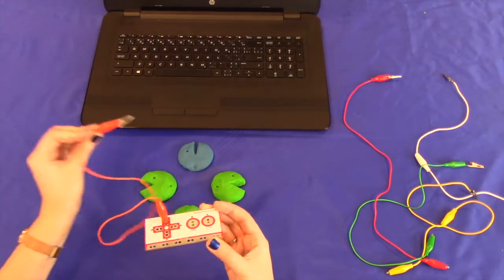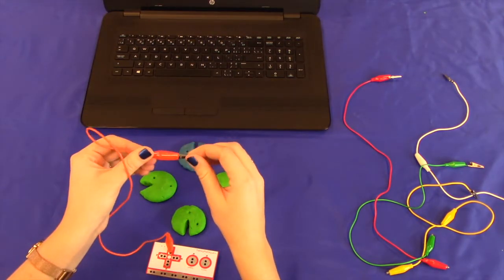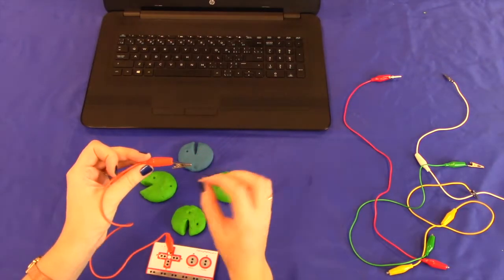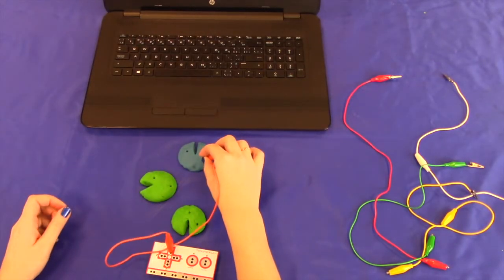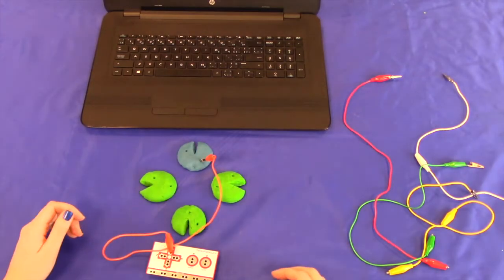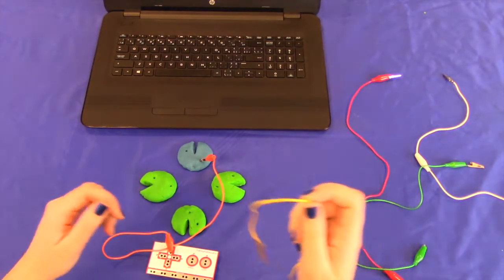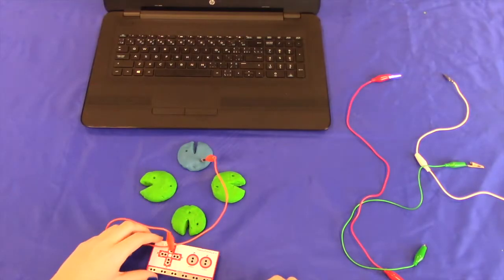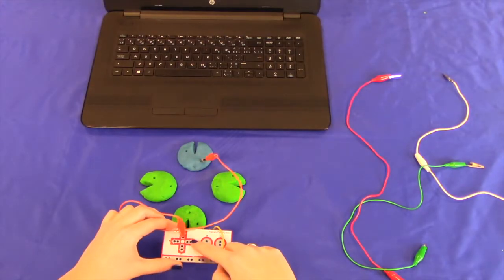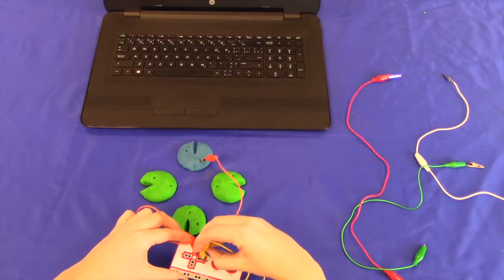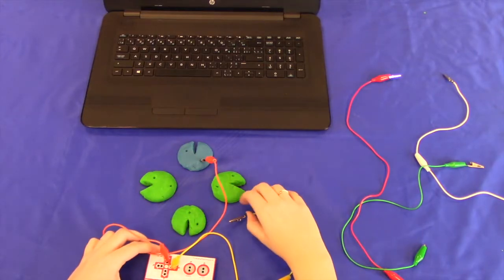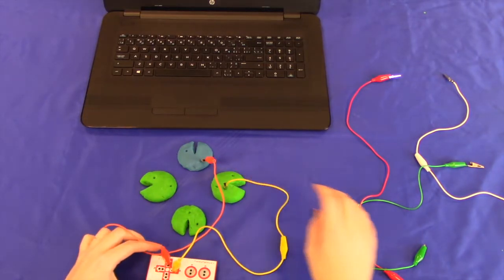We're just going to make sure that this silver part here of this alligator clip is fully exposed before we stick it into our Pac-Man. Next, I'm going to connect the cable on my right in the same way and just stick it anywhere right into our Pac-Man.